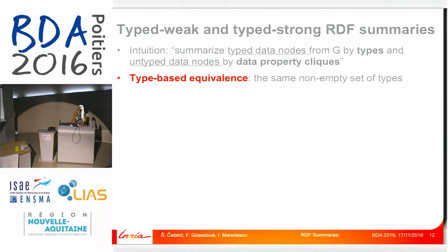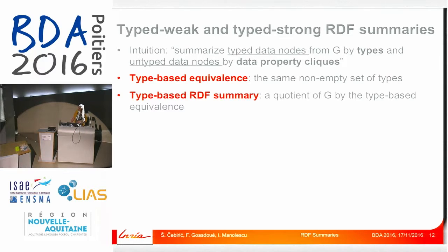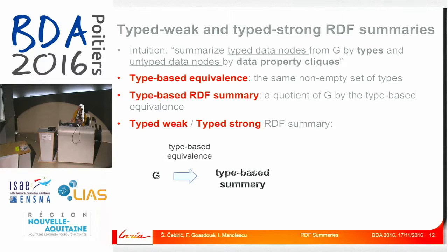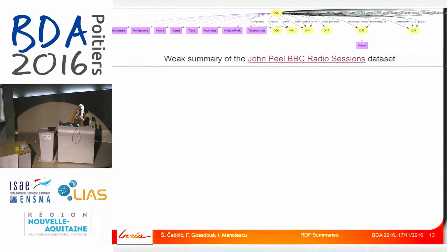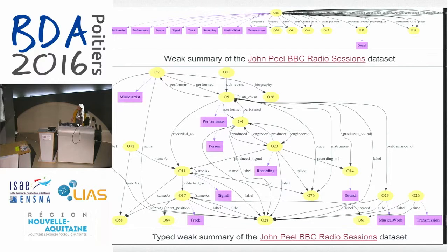We define type-based equivalence, where we require that two data nodes have the exact same typing, which generates a type-based RDF summary. Then we get type-to-weak and type-strong summaries: we take G, summarize the types based on type equivalence, and then summarize the type-based summary based on data properties — the cliques — to get the type-to-weak or type-strong summary. If the weak summary looked a certain way for a given dataset, the type-to-weak summary is clearly a better representation of the structure.